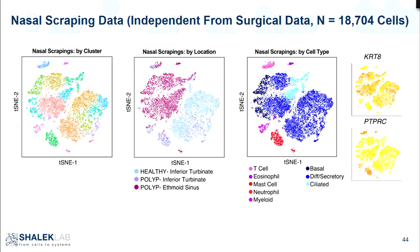What you see when you do this analysis is that these scrapings in the inferior turbinate — just two centimeters apart — are an entirely different universe. The healthy inferior turbinate, our polyp samples from the inferior turbinate, and from the ethmoid sinus all look completely different. We find interesting subpopulations, and some populations we actually miss when we do resections come in very cleanly in these scrapings, like our eosinophils.